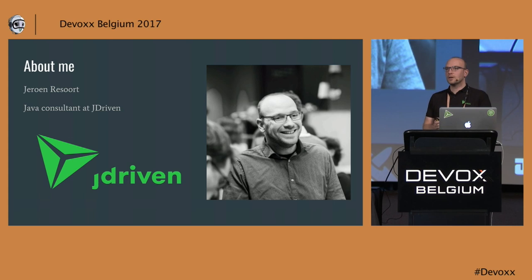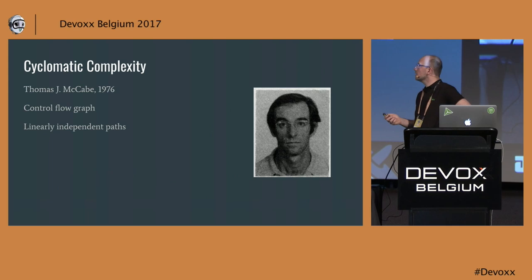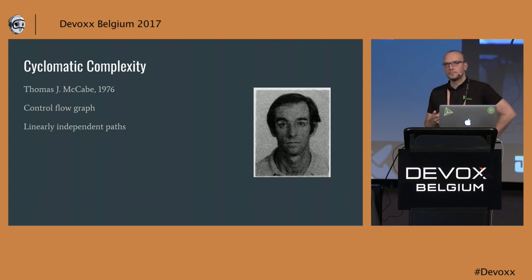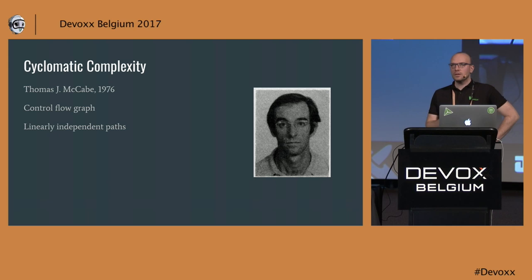Cyclomatic complexity was a concept developed by Thomas McCabe in 1976 — a time when almost every programming language had a goto statement. His idea was to use mathematical analysis by creating a graph of your code and calculating the amount of complexity that's in that code.